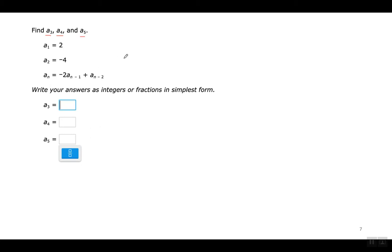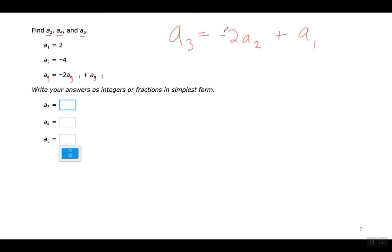Look at this formula. For the third term, I'm going to substitute a 3 here, a 3 here, and a 3 here. When I simplify that, it's going to say: A3 equals negative two times A2 plus A1. So the third term equals negative two times the second term plus the first term. El tercer término es igual a negativo dos multiplicado por el segundo término más el primer término. So A3 is going to equal negative two times the second term, which is negative four, plus the first term, which is positive two.